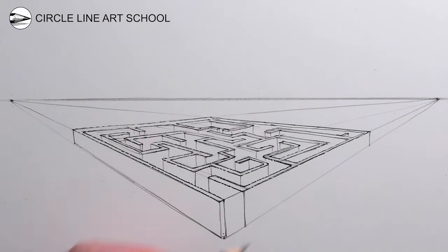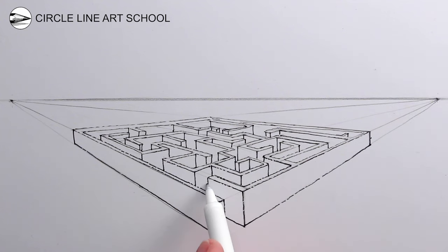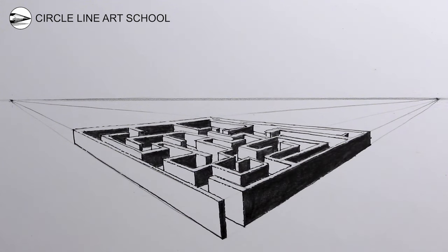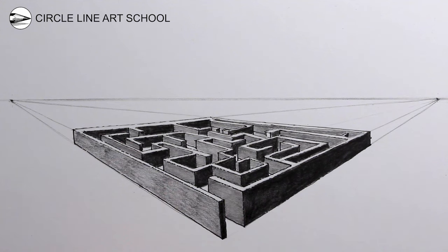Once you've completed that, then you could consider adding some shading, some tone to your drawing. To do that, I'm going to shade in one side of the maze structure with the darkest tone that the pencil could create, and then the other vertical side of the maze structure I'll use softer pressure and create a lighter tonal value on that side.